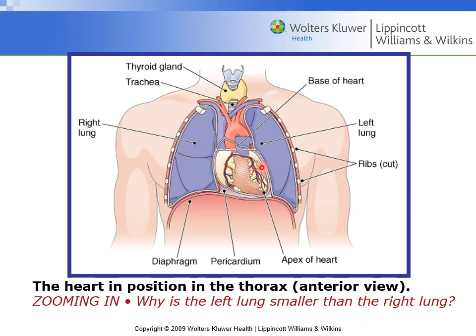The heart is surrounded by a pericardium. The prefix 'peri' means around, so the pericardium is a fluid-filled sac. It is very important because it reduces friction between the heart, the lungs, and surrounding structures. If the pericardium were not present, you would have increased friction, which could compromise the very structure of the heart itself.